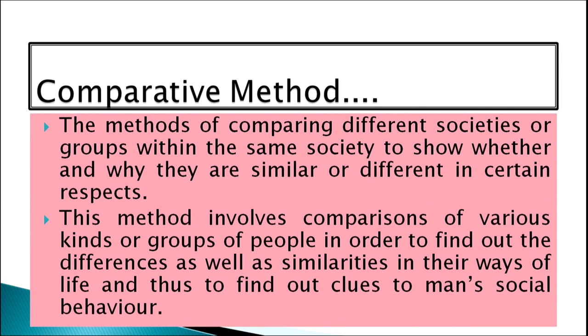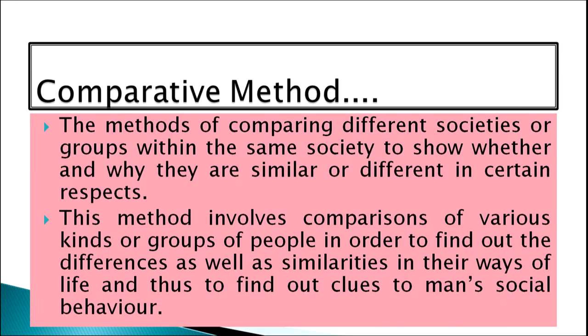Now we come to the second method used in sociology — the comparative method. This is the method of comparing different societies or groups within the same society to show whether and why they are similar or different in certain respects. We compare two societies, two eras, different people, and different norms. This method involves comparisons of various kinds of groups of people to find out differences as well as similarities in their ways of life and to find clues to man's social behavior.